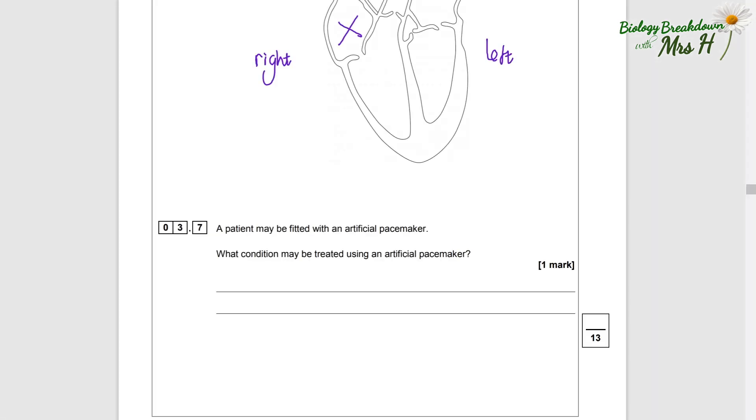3.7: A patient may be fitted with an artificial pacemaker. What condition may be treated using an artificial pacemaker? That will be an irregular heartbeat or arrhythmia.